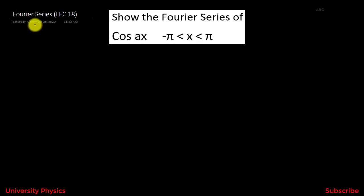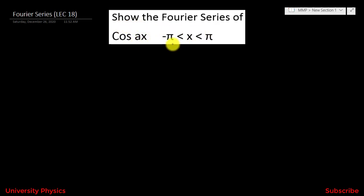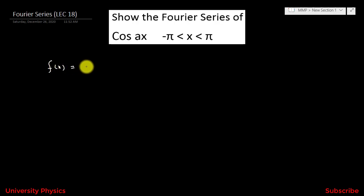Assalamu alaikum friends. Today we are discussing Fourier series lecture number 18, which says: show the Fourier series of cos(ax) with the limits from minus pi to pi. We have to show the Fourier series of cos(ax), where the function is f(x) = cos(ax).